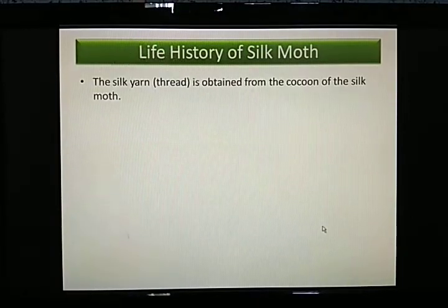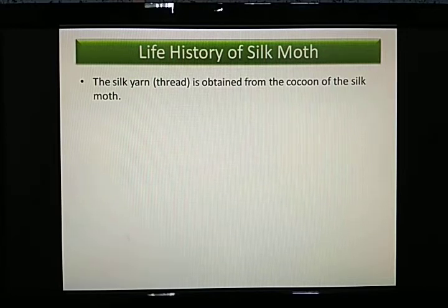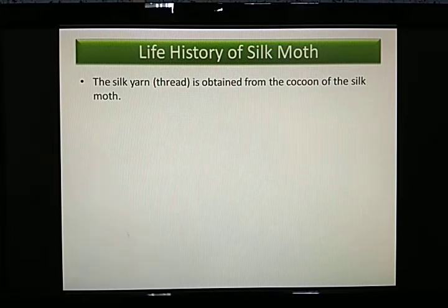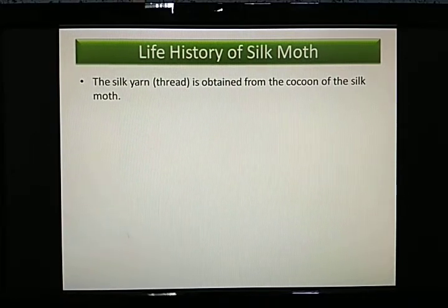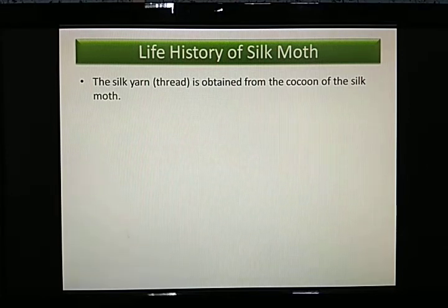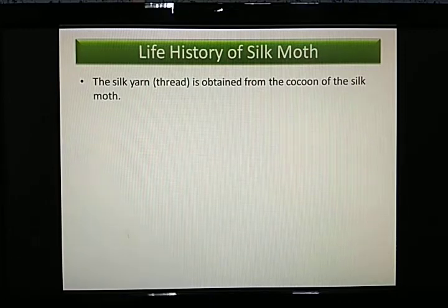The silk yarn or thread is obtained from the cocoon of the silk moth. After the silkworm inside the cocoon develops fully and gradually turns into an adult moth, what is left behind is the cocoon — and from this cocoon we get the silk yarn, silk thread, or silk fiber.